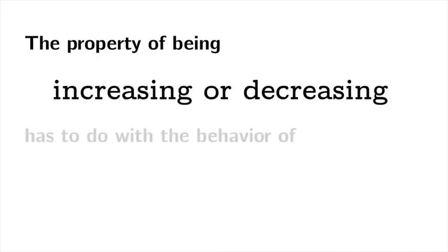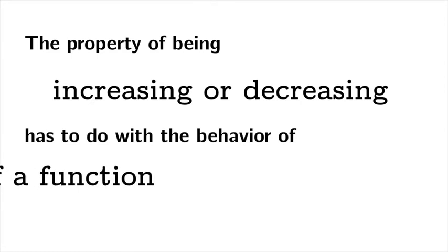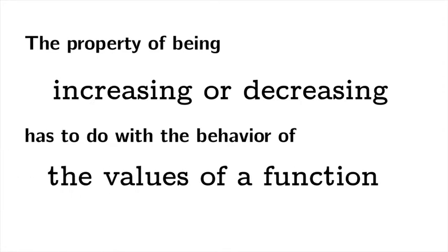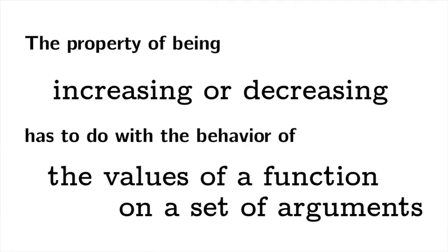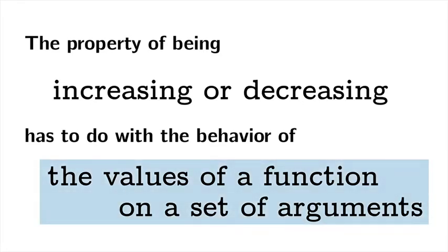One lesson to take away from this is that the property of being increasing or decreasing has to do with the behavior of the values of a function on a set of arguments. You can't just have one or the other — you really need them both together before you can say whether something's increasing or decreasing.